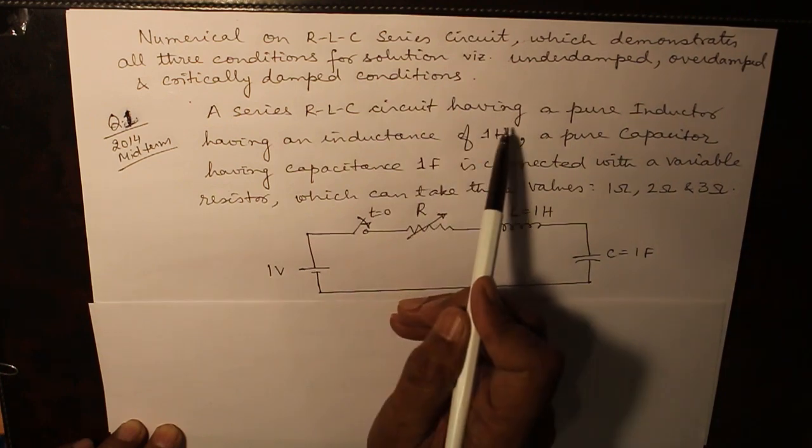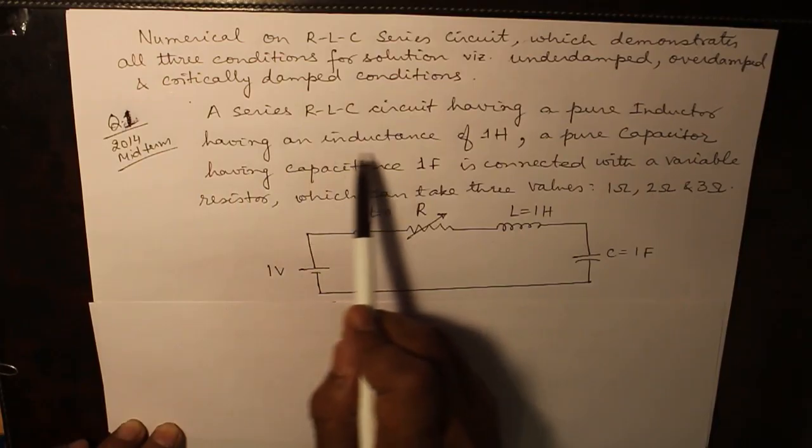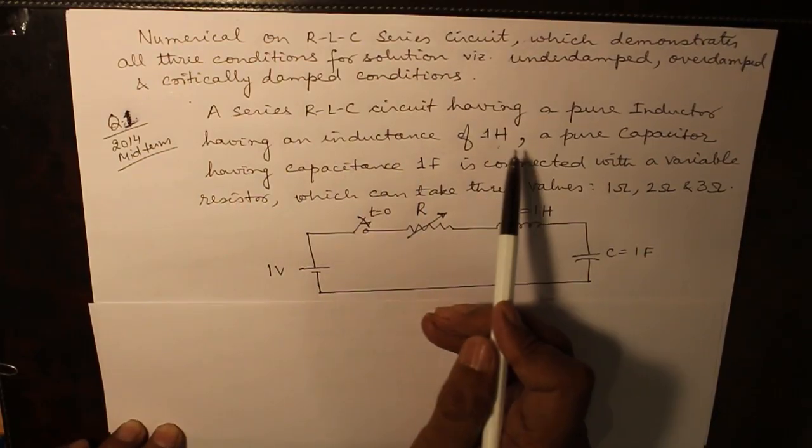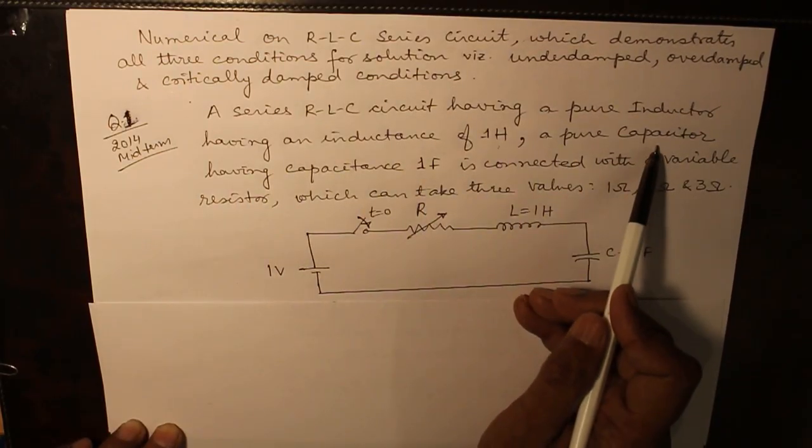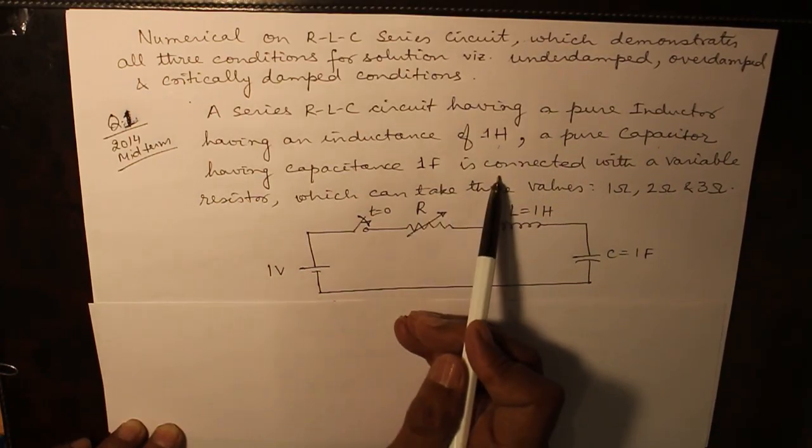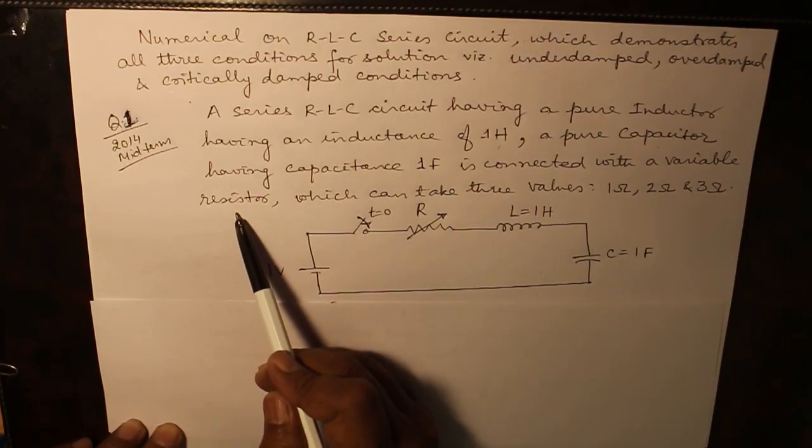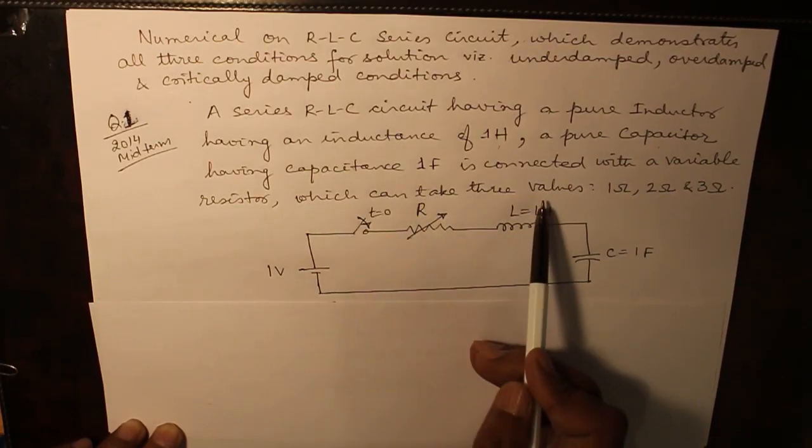A series RLC circuit having a pure inductor (a pure inductor is one in which there is no resistance) having an inductance of 1 Henry, a pure capacitor (a pure capacitor is one which does not have any conductance in parallel to it) having capacitance 1F is connected with a variable resistor, the value of which can be varied, which can take three values.